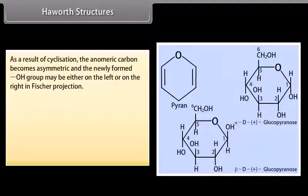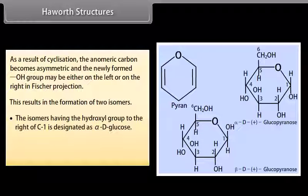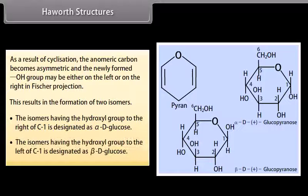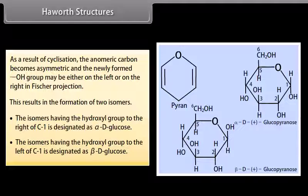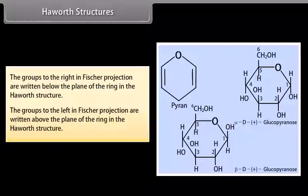Haworth structures. As a result of cyclization, the anomeric carbon becomes asymmetric and the newly formed OH group may be either on the left or on the right in Fischer projection, resulting in the formation of two isomers. The isomer having the hydroxyl group to the right of C1 is designated as alpha-D-glucose, and the isomer having the hydroxyl group to the left of C1 is designated as beta-D-glucose. The lower thickened edge of the ring in Haworth structure is nearest to the observer. Groups to the right in Fischer projection are written below the plane of the ring, and groups to the left are written above the plane of the ring.